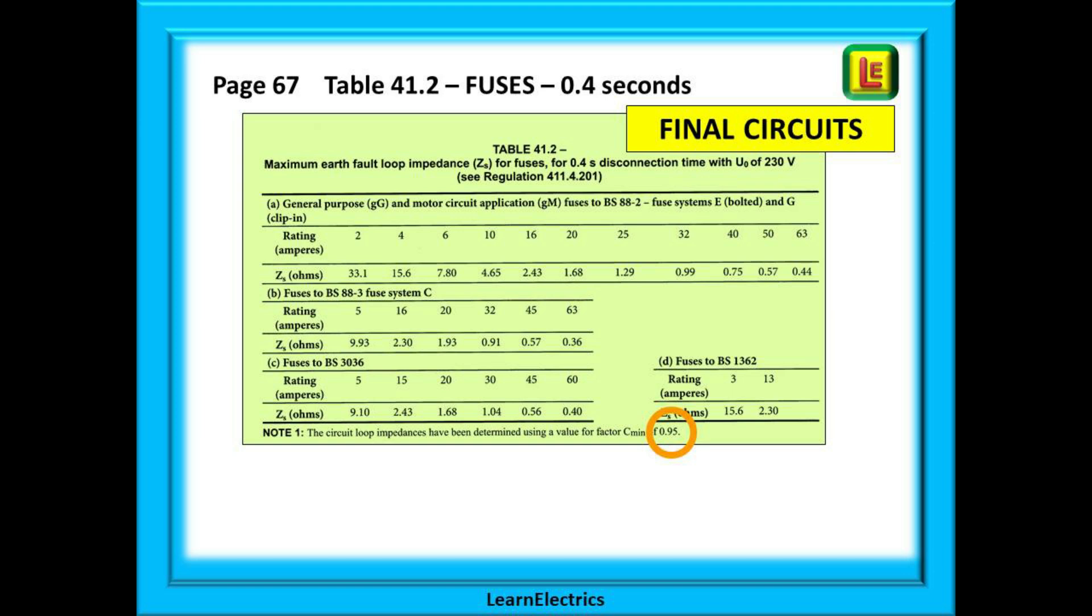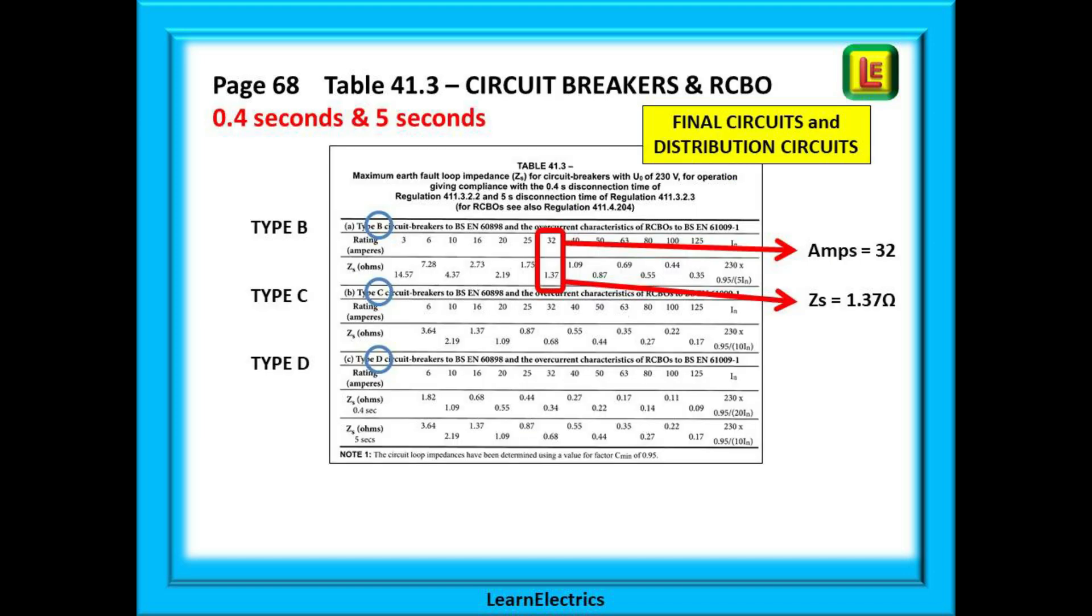Moving on to page 68, we find table 41.3 for circuit breakers and RCBOs. This table covers 0.4 second and 5 second disconnection times. So, it is for both final circuits and distribution circuits. Three types of breaker are available. Type B, C or D.